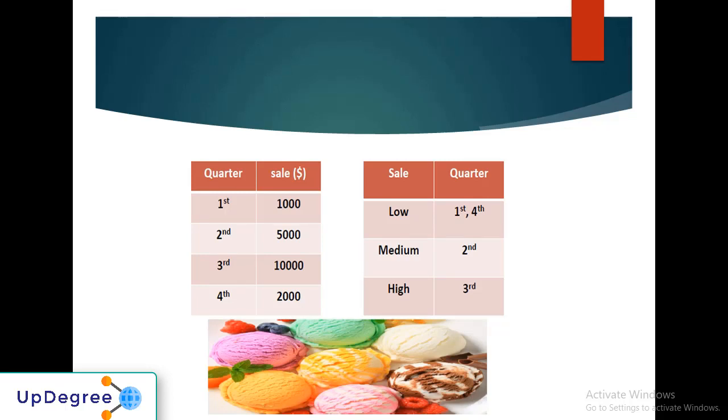When I see the numbers, the first and fourth quarter are very low, the second quarter is doing good, and we had the highest sales in the third quarter. From this we can interpret the first and fourth quarters fall in the winter season and the third quarter was summer, because ice cream sales go up during summer.